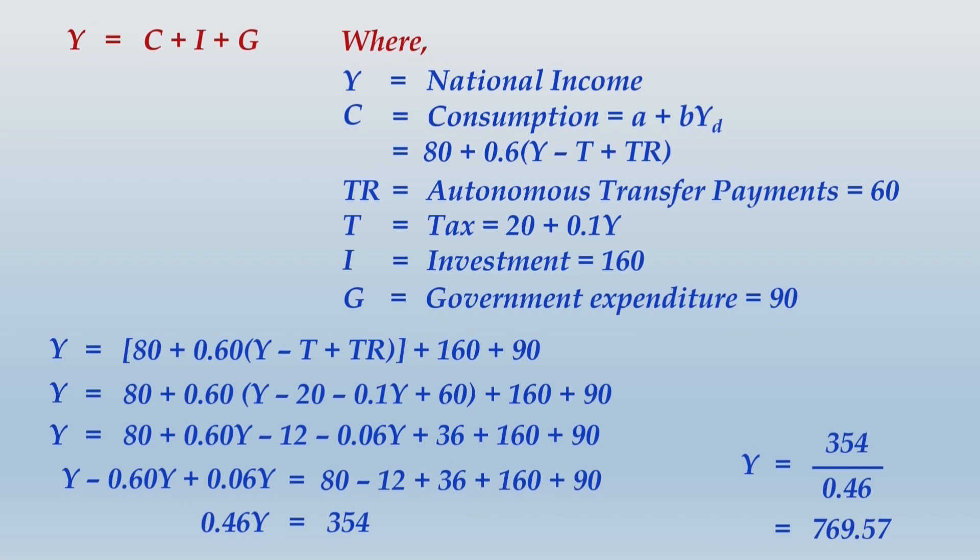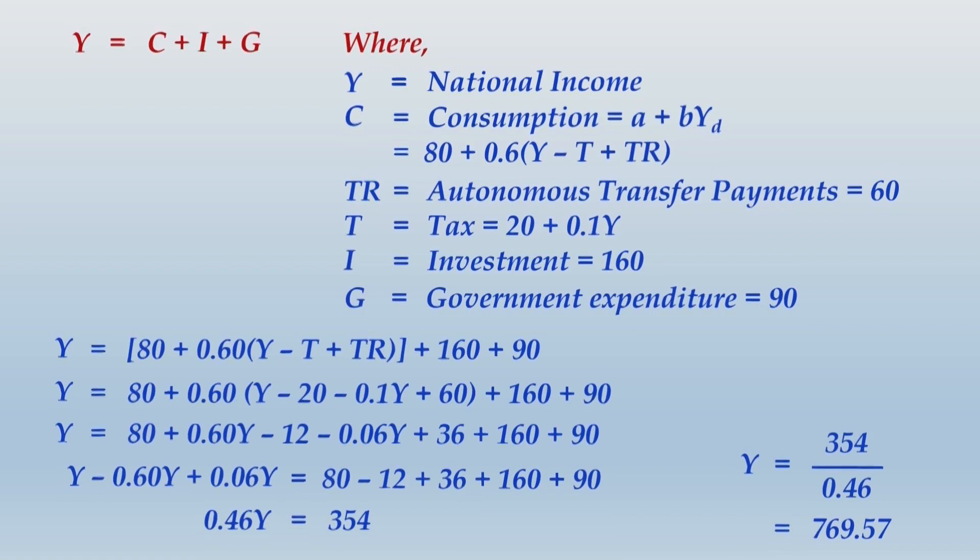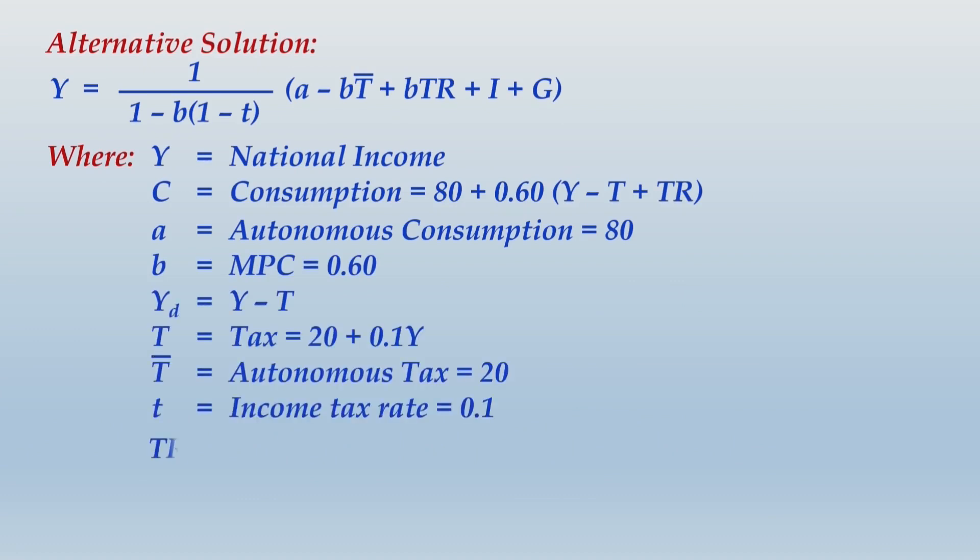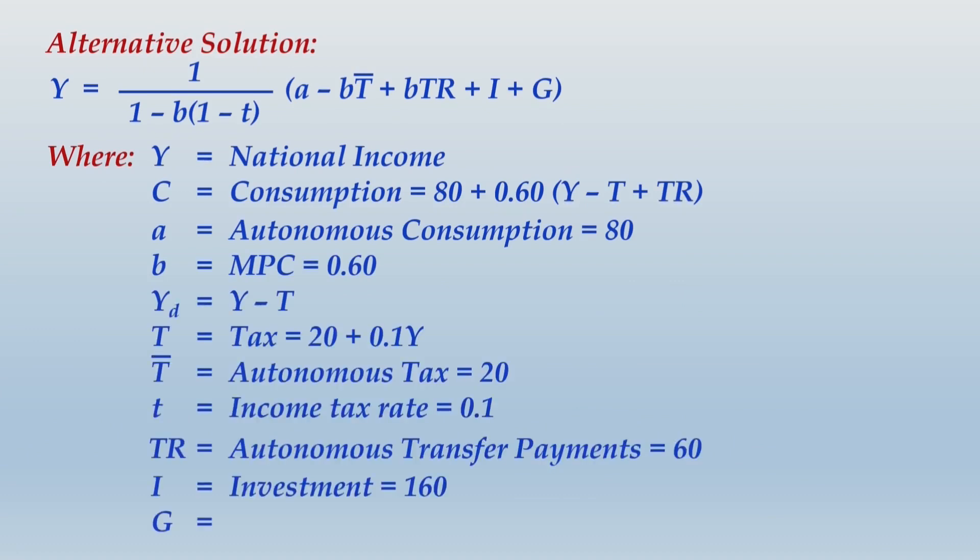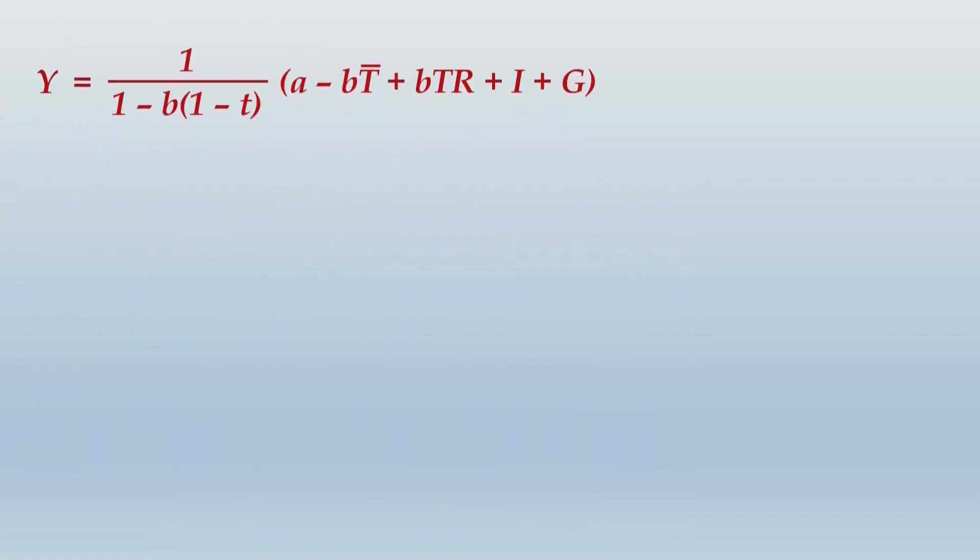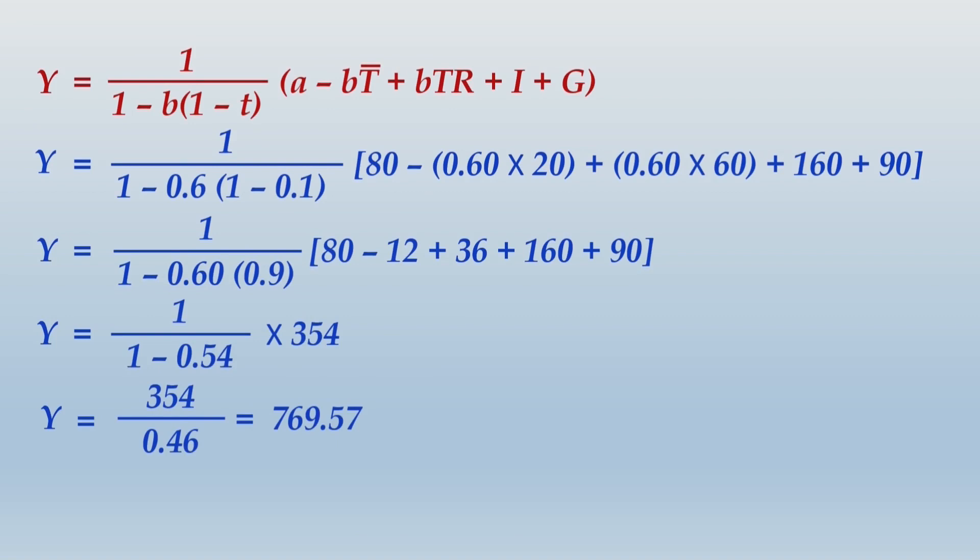Y value should be 769.57. Let me also show you the alternate way of presenting the solution. Here you write the main equation and define all the variables. Once you define all the variables, next thing you have to do is substitute the value of these variables in the main formula to get the value of Y. I am sure you would have done this already. When you do that with accurate calculations, you should be getting 769.57 as the value of Y.